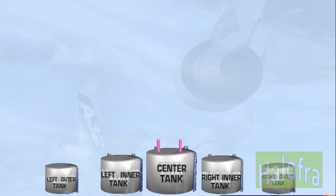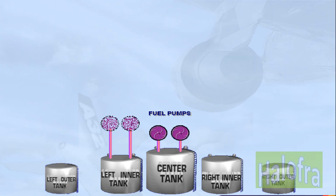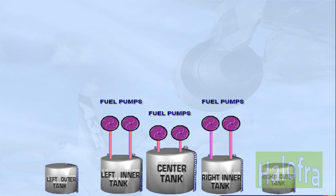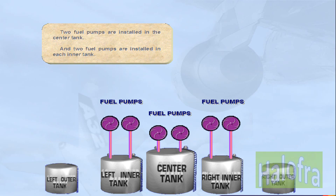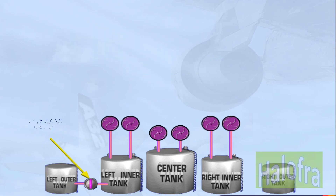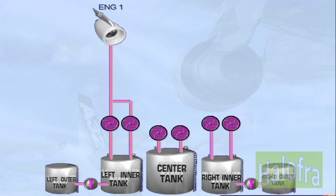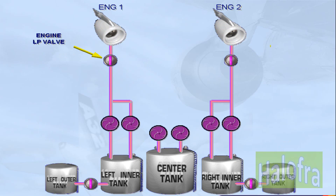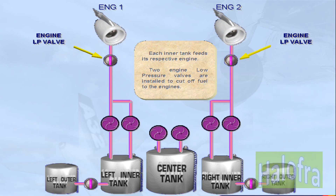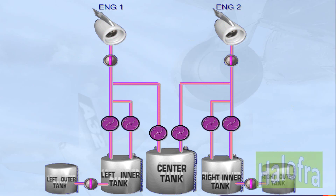Two fuel pumps are installed in the centre tank and two fuel pumps are installed in each inner tank. Two transfer valves allow fuel to transfer from the outer tanks to the inner tanks. Each inner tank feeds its respective engine. Two engine low pressure valves are installed to cut off fuel to the engines. The centre tank also feeds the engines, and a cross feed valve is fitted to connect or isolate the left and right sides.